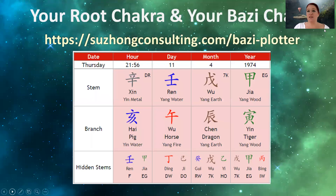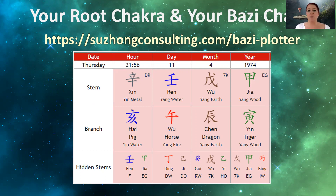The first thing you need to do is actually plot your Bazi chart. You can go to this link — I will also put it in the notes to this video — and then you just key in your date and time of birth. The time of birth is actually very important, because the root chakra is analyzed by looking at your birth hour, not the year, the month, or the day. So you need to key in the date and time of birth, even if it's just approximate.